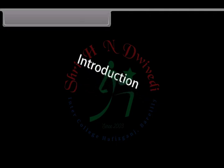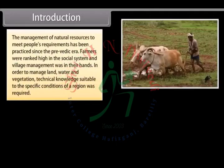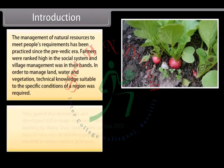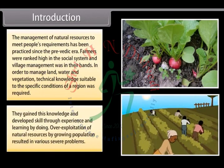The management of natural resources to meet people's requirements has been practiced since the pre-Vedic era. Farmers were ranked high in the social system and village management was in their hands. In order to manage land, water and vegetation, technical knowledge suitable to the specific conditions of a region was required. They gained this knowledge and developed skill through experience and learning by doing.